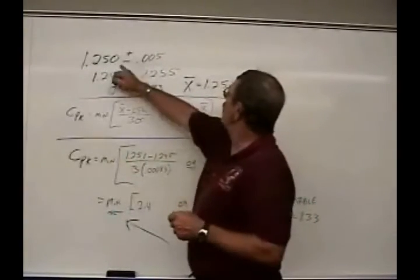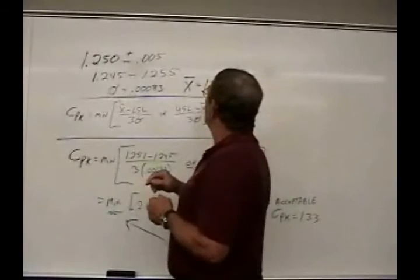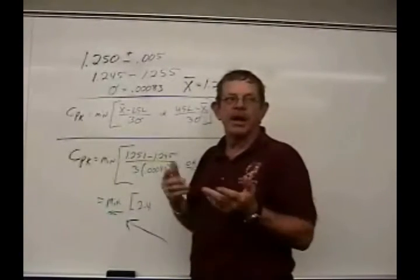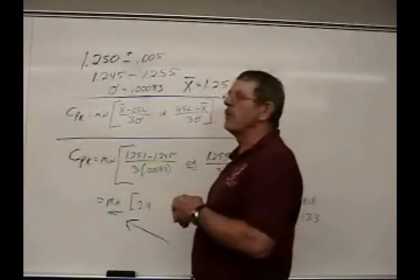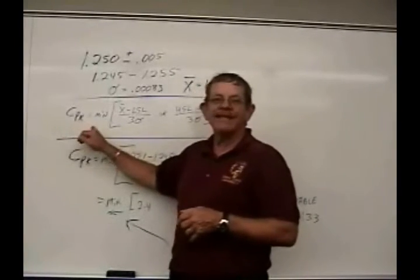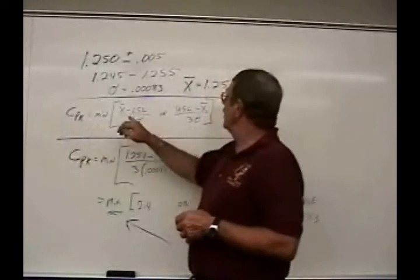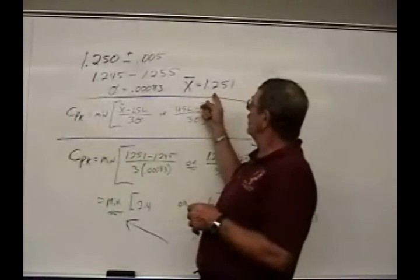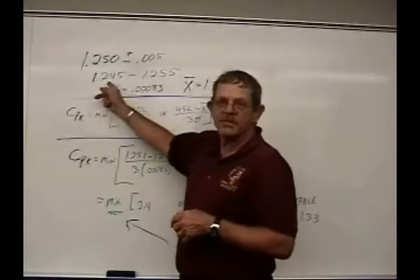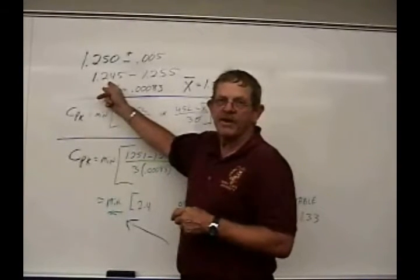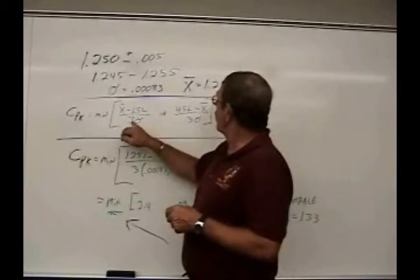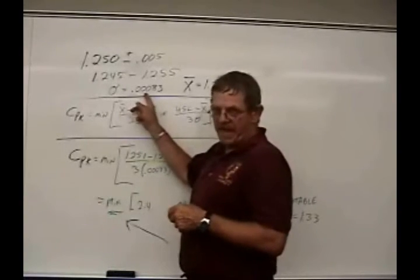We know what the tolerance or the spec limits are, we know what the standard deviation is, and we know what the average mean value is of the parts that were measured. So we take a look at our formula. CPK is the minimum of either X bar, which is right there, minus the lower spec limit, which in this case the lower spec limit would be 1.245, divided by 3 times sigma, or 3 times that number, the standard deviation number.